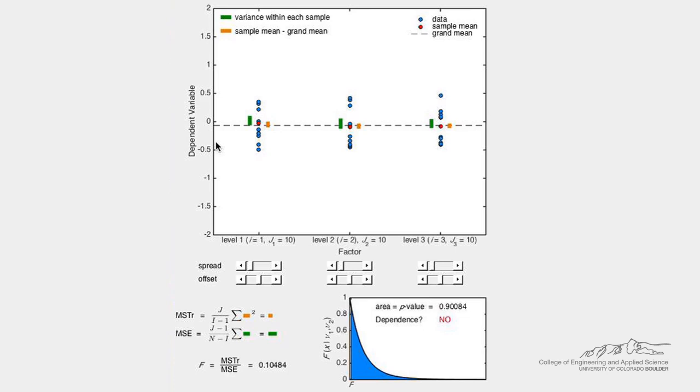This demo shows how a balanced one-way analysis of variance works, also known as ANOVA. Let's consider three experiments, each with ten measurements shown as the blue circles here. Capital I is the number of experiments, so three in this case.